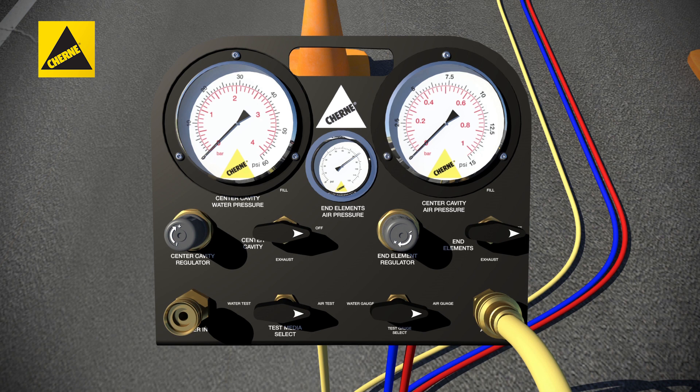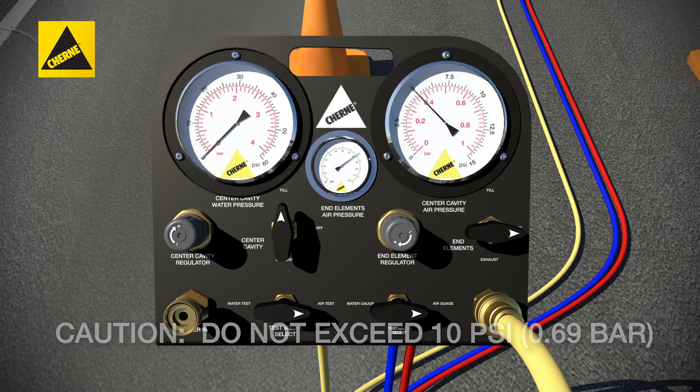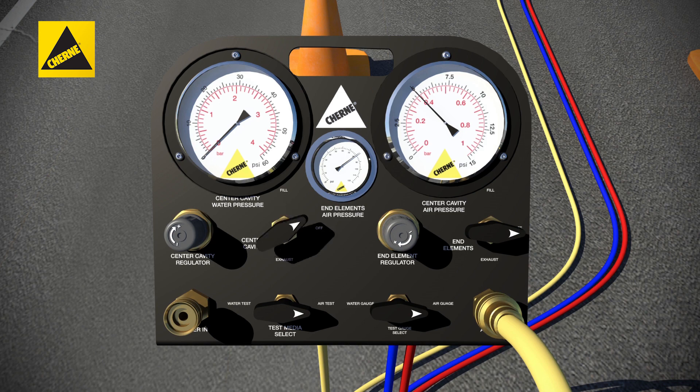To pressurize, place the test pressure inflation valve in the fill position. Turn the test pressure regulator until the specified test pressure is indicated on the test pressure gauge. Place the test pressure three-way valve in the off position.